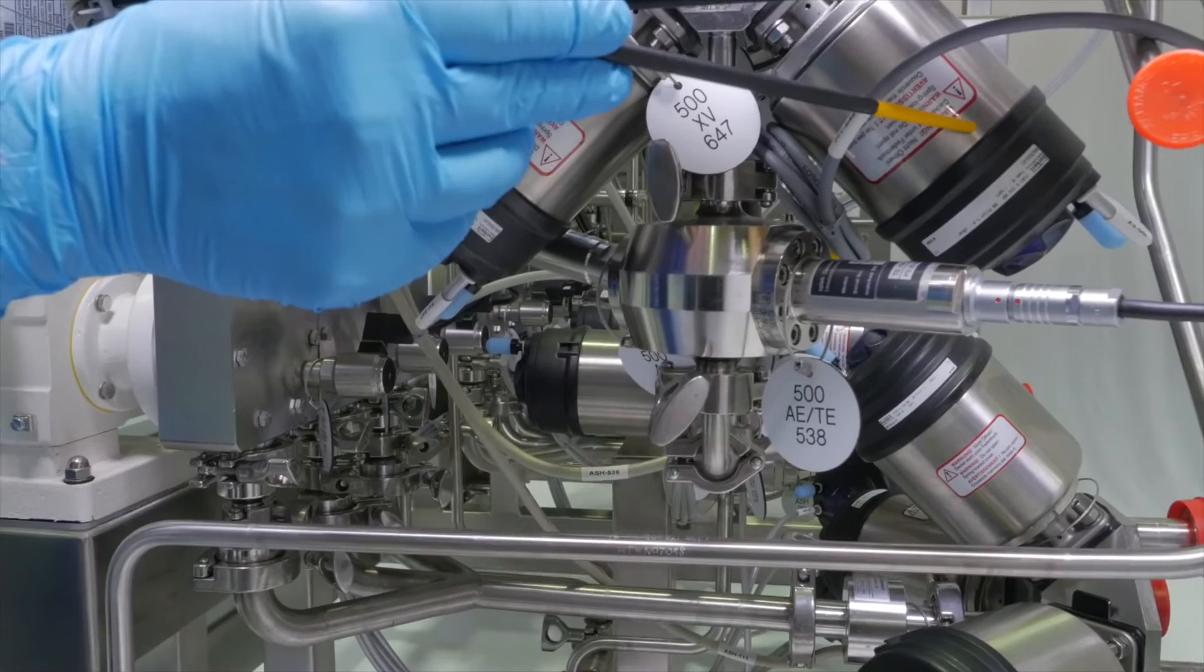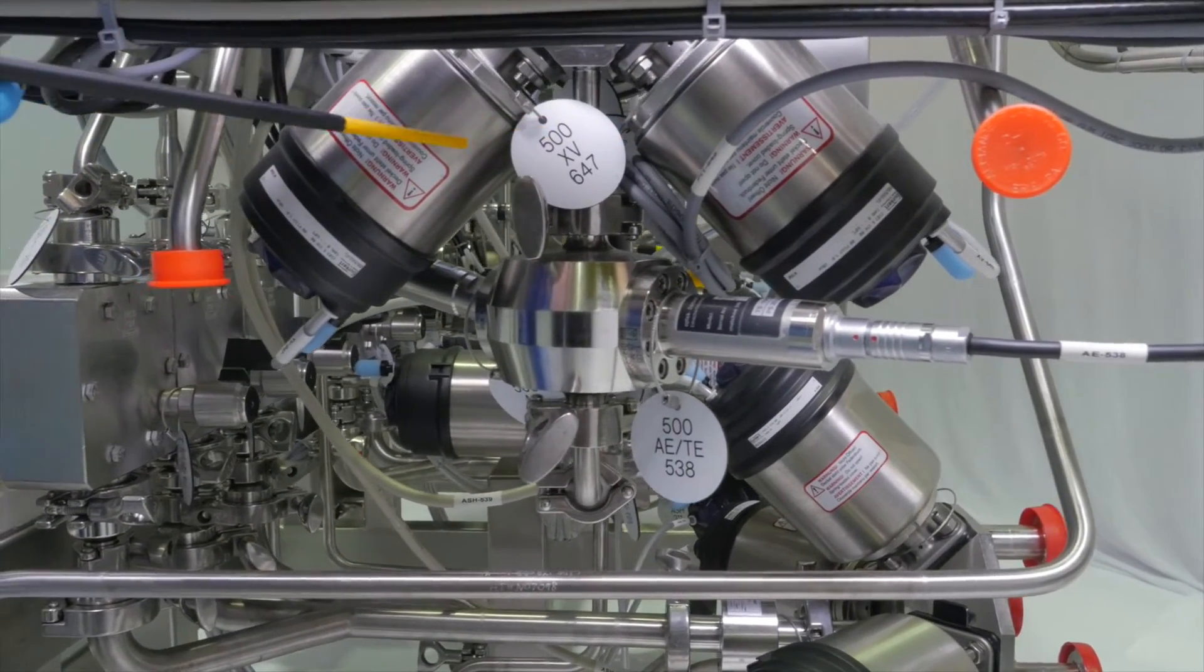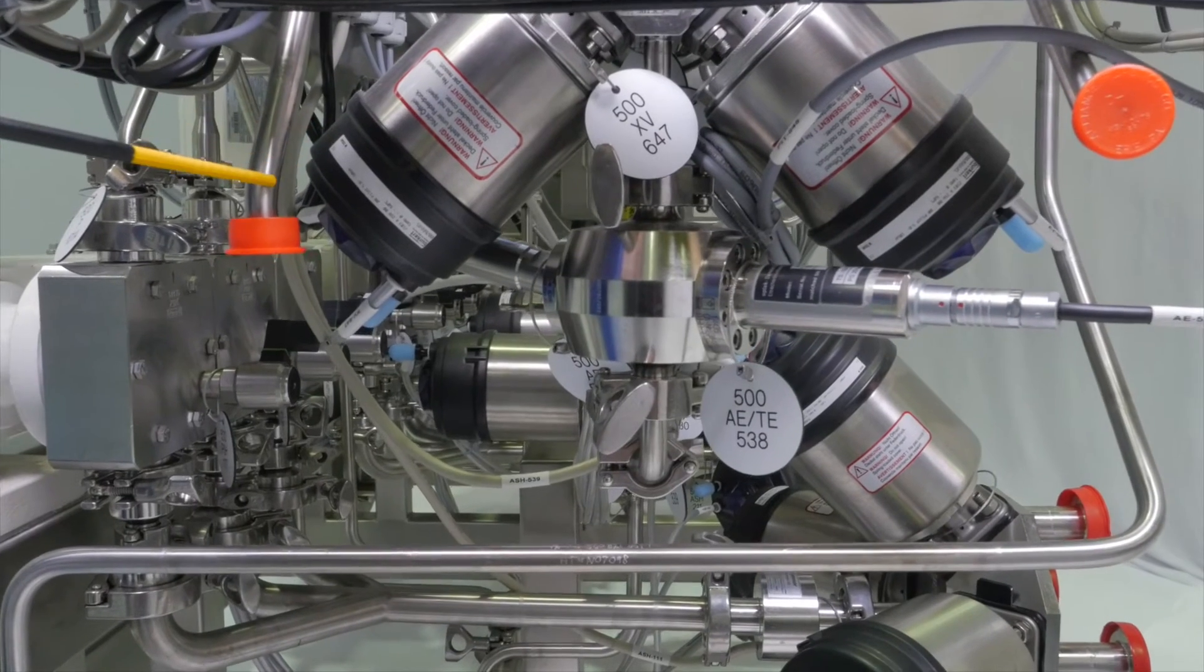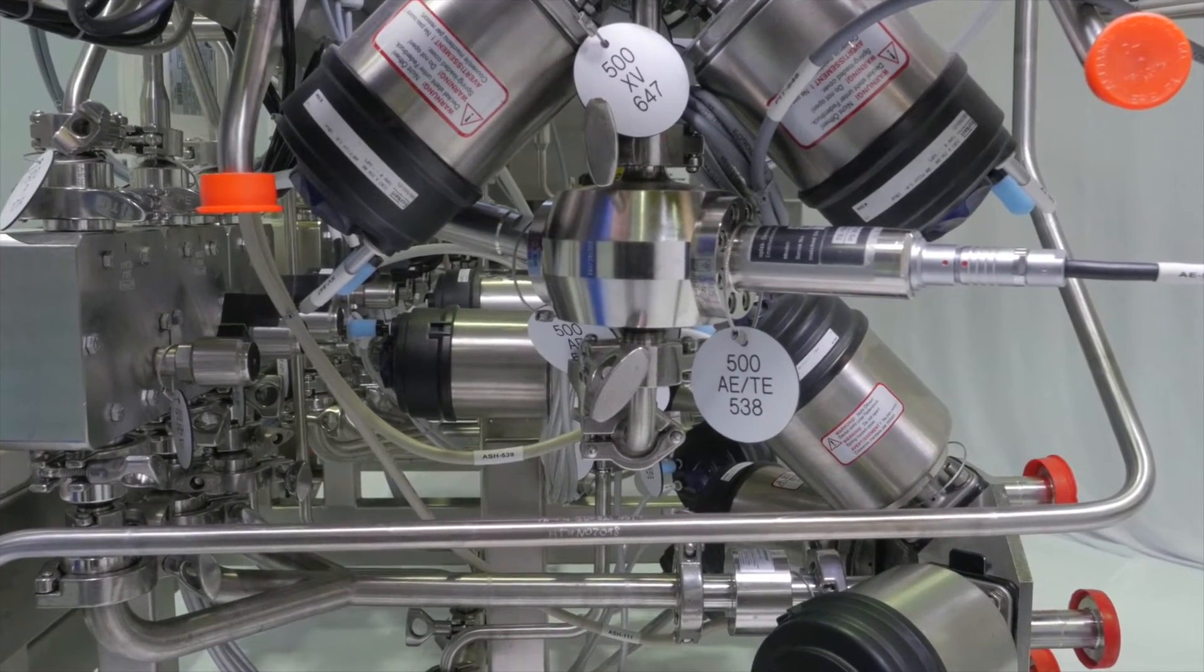The chromatography block valve directs the flow to the top of the column for loading, elution and washing, to the bottom of the column for reverse flow for column regeneration, or to bypass the column to waste.